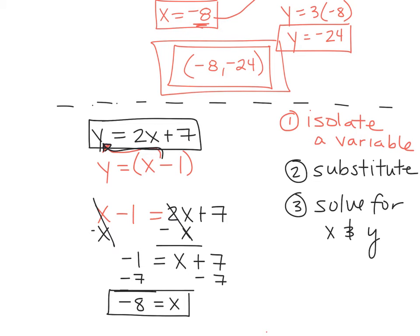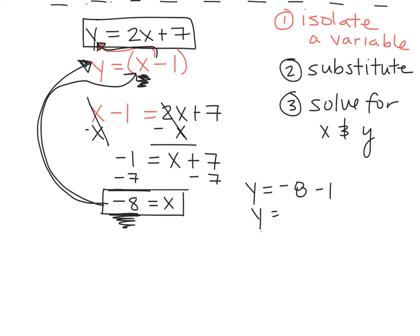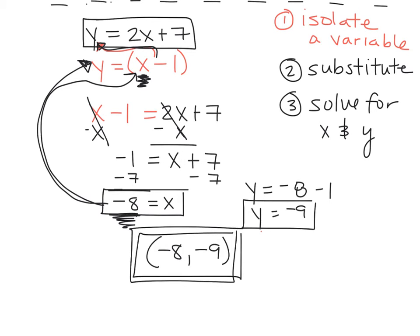How do I find Y? You plug it back in. And now, here's the thing. Both of those equations have Y by itself. You may plug it into either equation. You should get the same answer regardless. So I'm going to plug it into this one just because it's a simpler equation. So if it's Y equals X, this X is what number? Negative 8. It's the number we just solved for. So we're just plugging it in right here. So Y equals negative 8 minus 1, which is what? Negative 9. So your answer is negative 8 for your X value, negative 9 for your Y value. That is substitution.